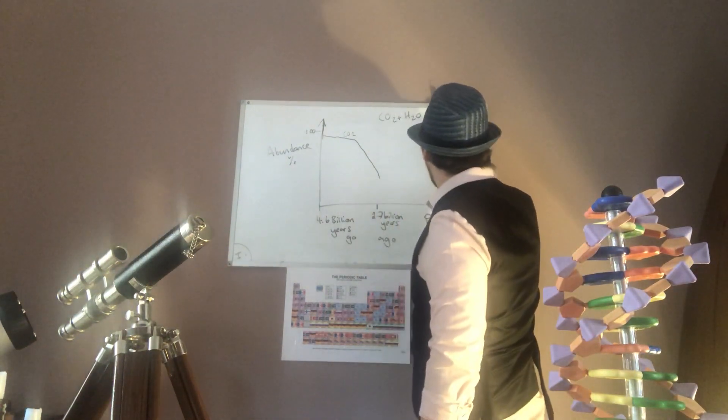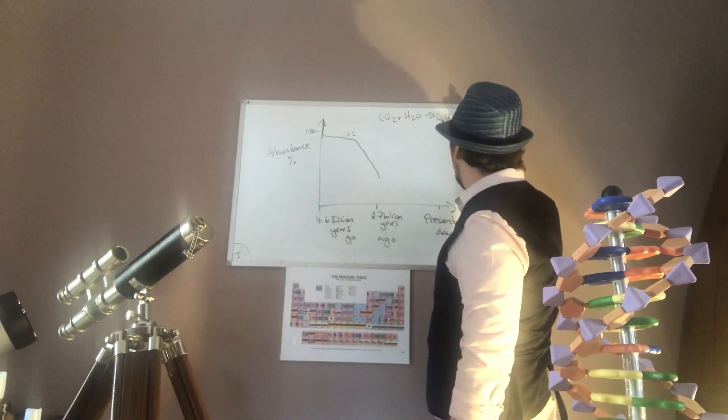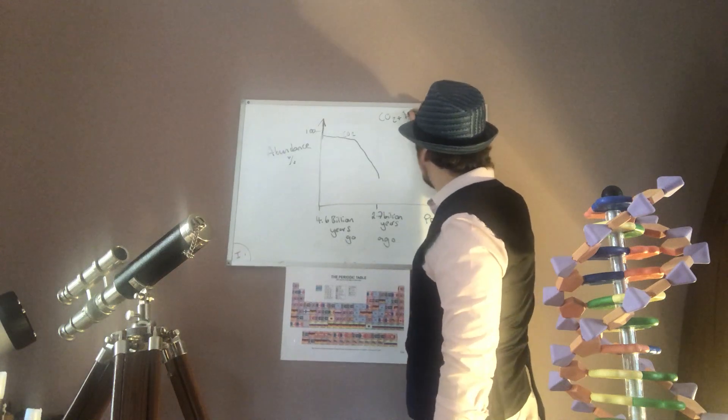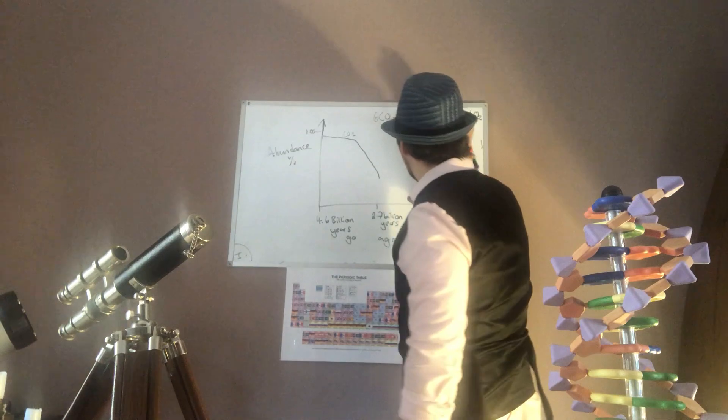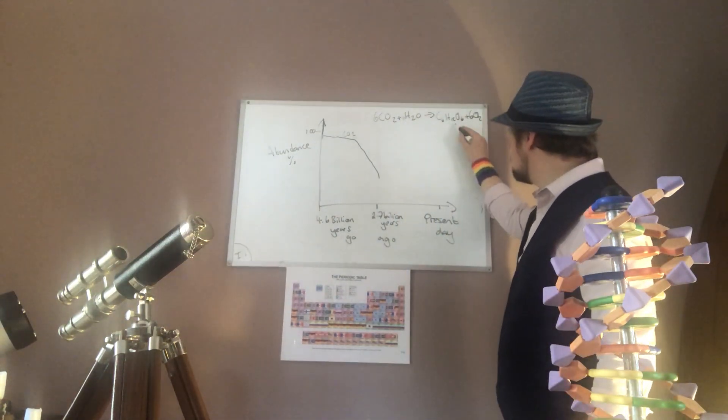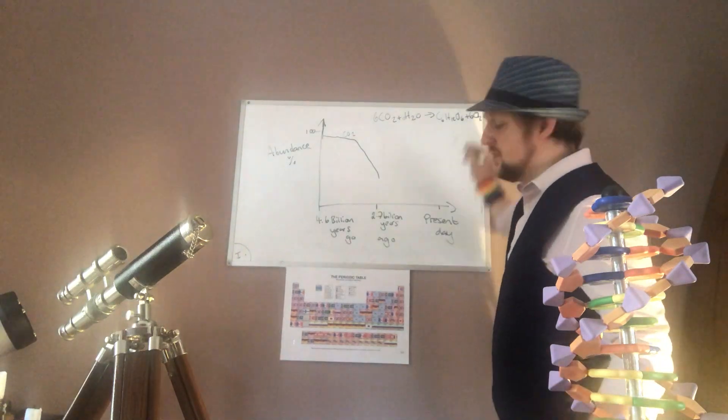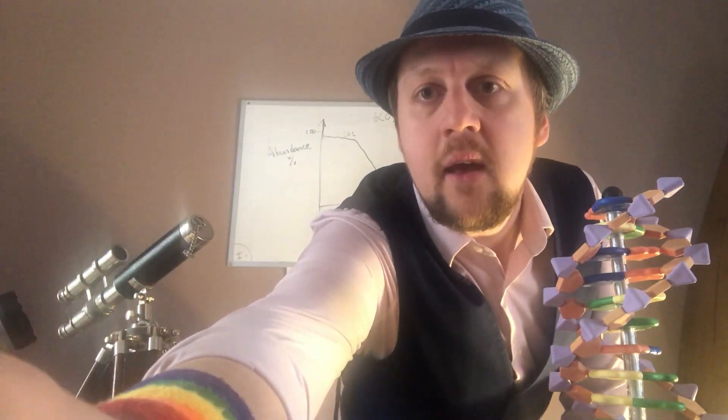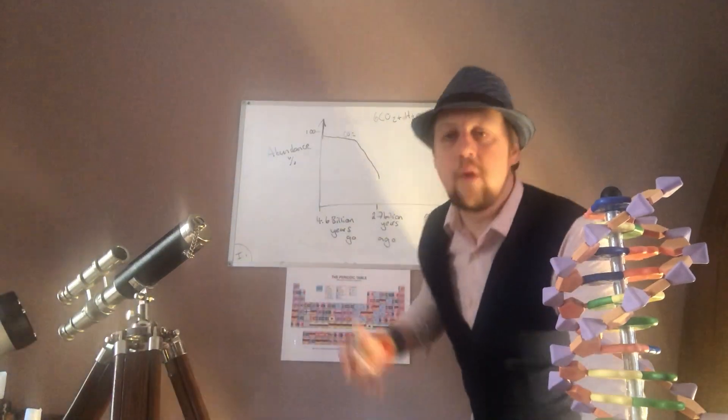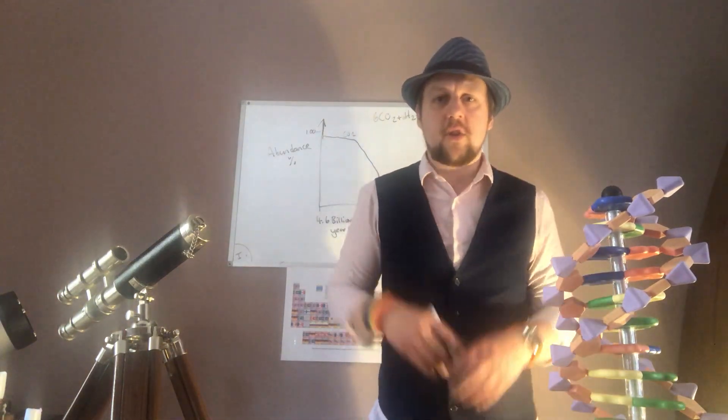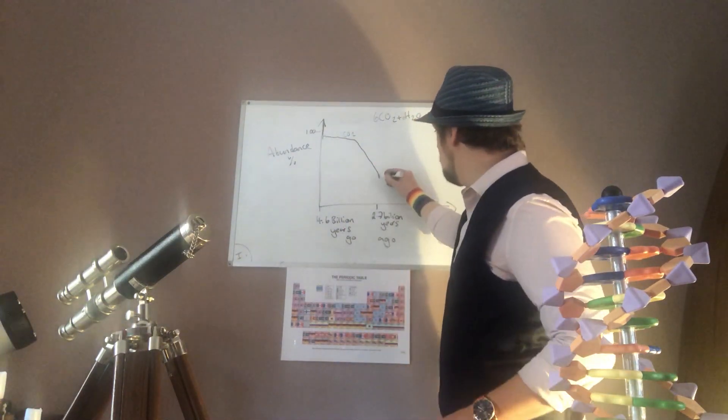What process uses carbon dioxide and water? Photosynthesis, of course - one of the most important processes, if not the most important process on the planet. Carbon dioxide plus water makes glucose and oxygen. One of the key products is oxygen, so the carbon dioxide levels fell even more.